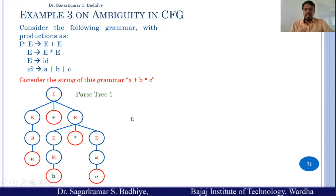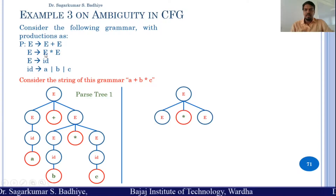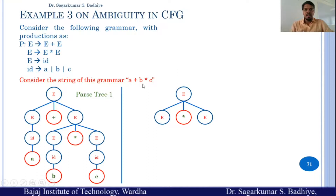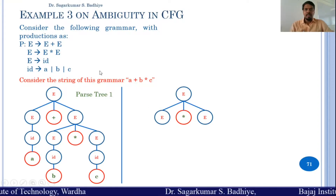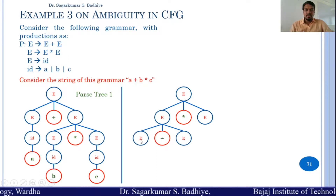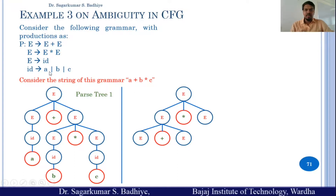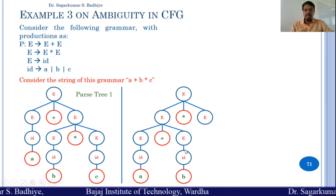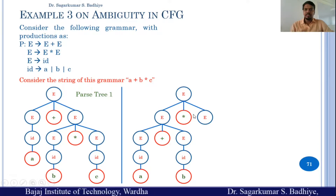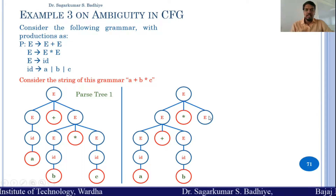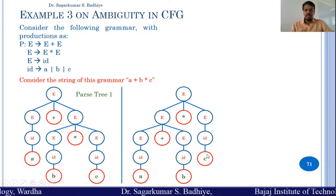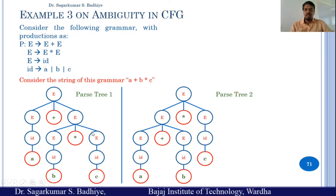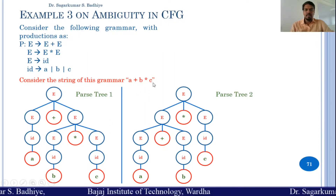The same string can be derived in another fashion (Parse Tree 2): starting with e → e * e; before the star we want a + b, so the first e is replaced by e + e; the first e → id → a, and the second e → id → b, giving a + b; lastly the right e of the star is replaced by id → c. So we have again derived a + b * c — this is the second parse tree.